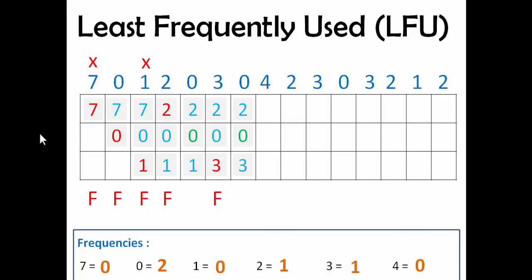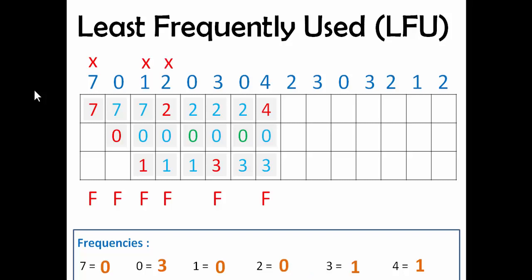The next page is 0, which is already present, so 2, 0, and 3 will remain there — there will be a page hit, and 0's frequency will increase. The next page is 4, so we check: 0's frequency is 3 (the highest), and 2 and 3 both have frequency 1. We check left to right — 2 came first, so we remove 2 and add 4. There will be a page fault. 4's frequency will increase, 2's frequency will reset, and we put a cross over 2.